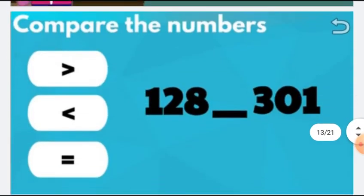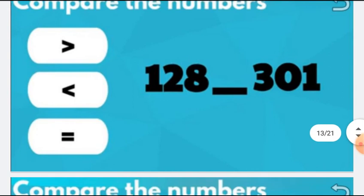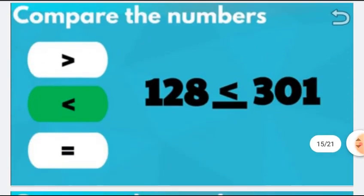We have the next question: compare the numbers. We have to compare these two numbers. In 128, at the hundreds place is 1, but in 301 at the hundreds place is 3. As we all know, 1 is less than 3. So 301 is greater than 128.